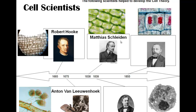Then we have Matthias Schleiden, who looked at plants and told everybody that plants are all made out of cells. A year later, Theodore Schwann did the same thing for animals, saying all animals are made of cells. Then, with the help of all of those discoveries and more time, Rudolf Virchow said cells are the basic unit of all living things — not just plants, not just animals, but bacteria, fungus, and other things as well.